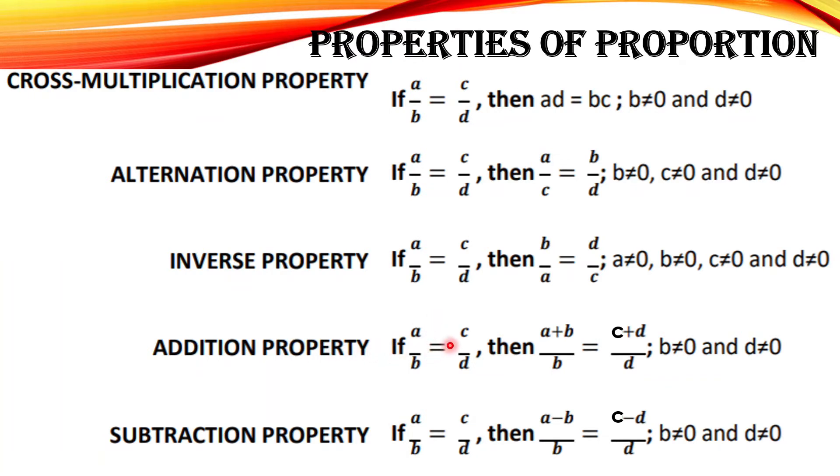If a over b is equal to c over d, then a plus b over b is equal to c plus d over d, where b and d are not equal to zero.